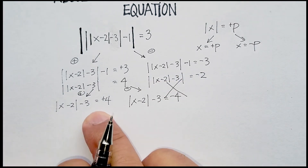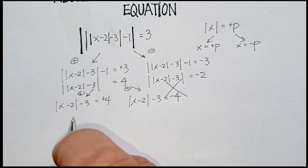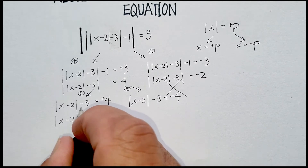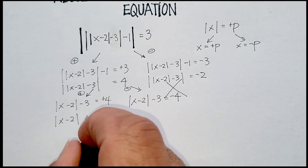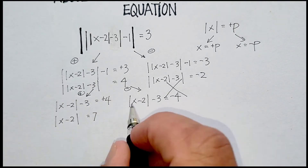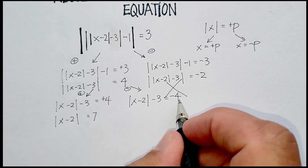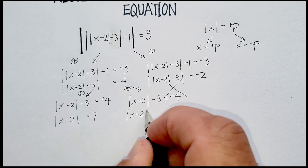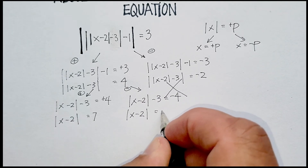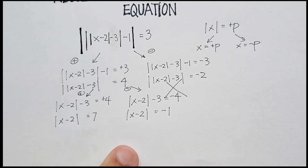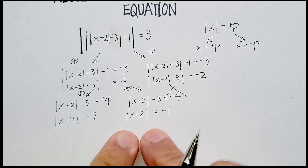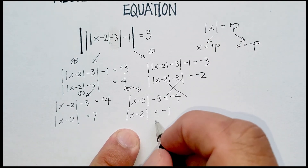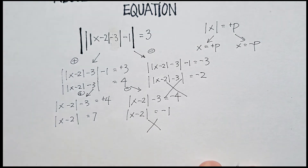Let's go ahead and isolate the absolute value. Add 3 to both sides: I end up with |x - 2| equals positive 7. Over here, add 3 to both sides and I end up with absolute value of x minus 2 is equal to negative 1. Again, this is an invalid statement — I can't actually use it, so I'm going to stop right there.